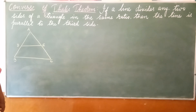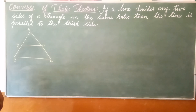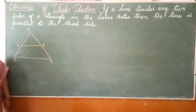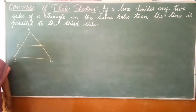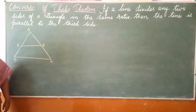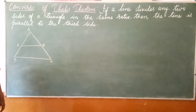We had completed Thales theorem and we had also proved it. Now let us prove the converse of Thales theorem. The converse is nothing but the hypothesis and conclusion of the original statement will be reversed.